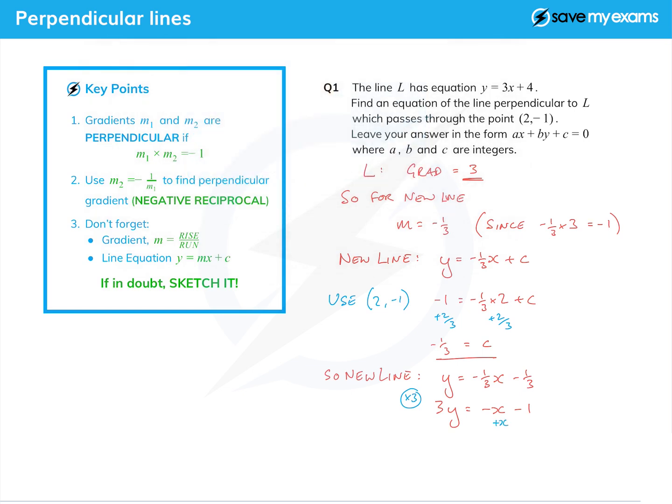To put it all on the same side, let's add the x to both sides and add the 1 to both sides. That gives me my final answer of x plus 3y plus 1 equals 0. There you go, that's the first question.